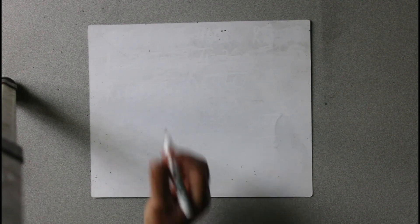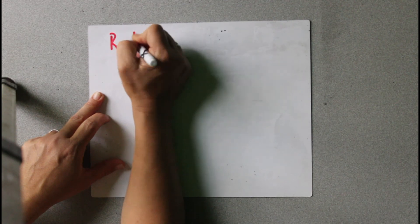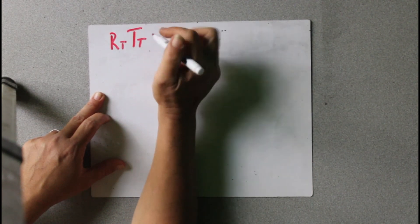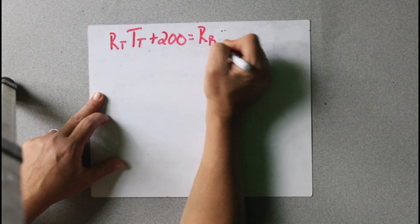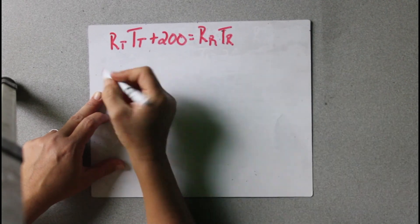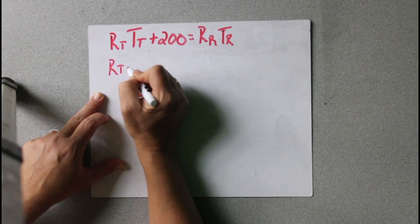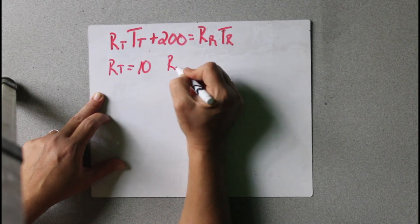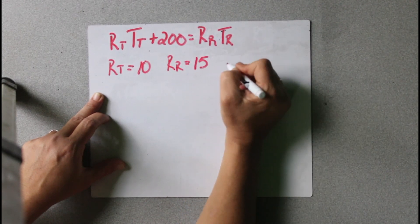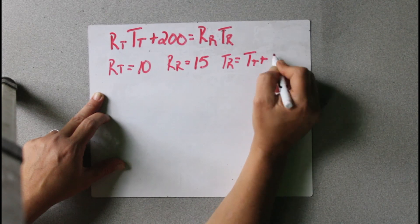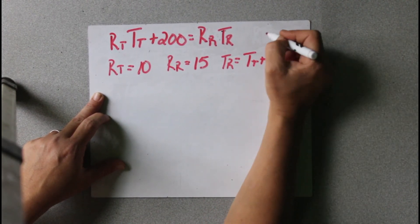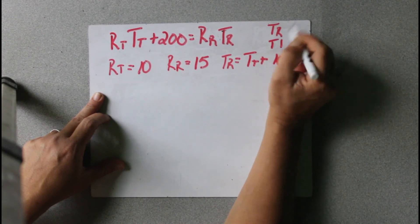Let's do B. This is B on our practice problems. It says given RT times TT plus 200 equals RR times TR. And then we have RT equals 10, RR equals 15, and TR equals TT plus 10. And we're supposed to find TR and TT.